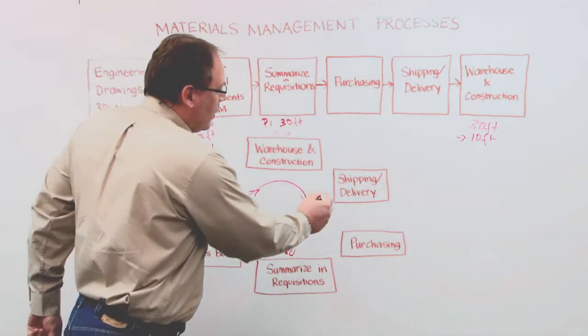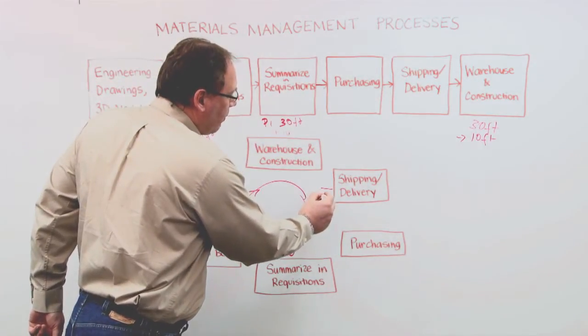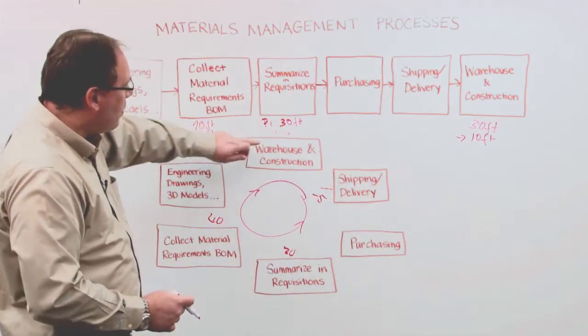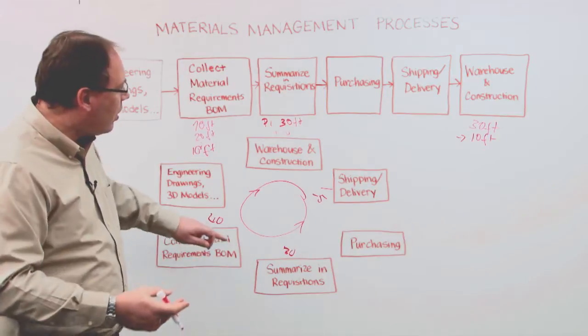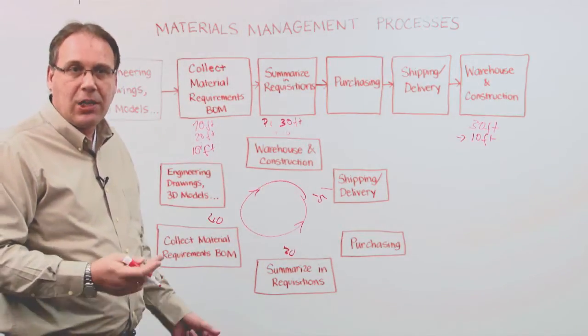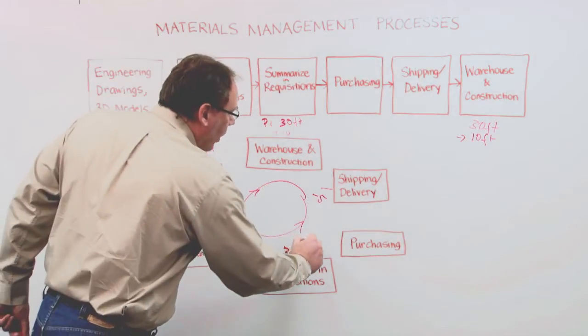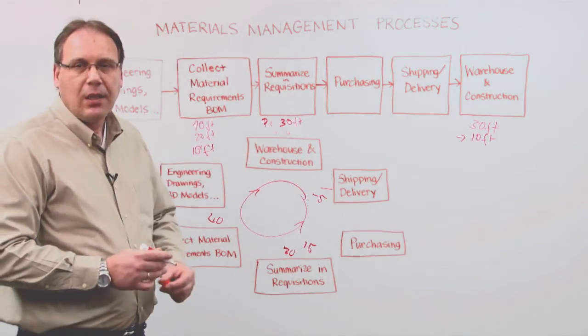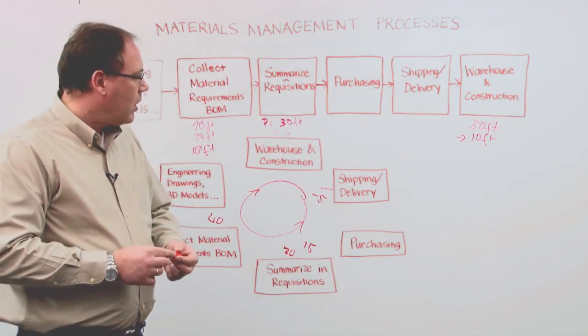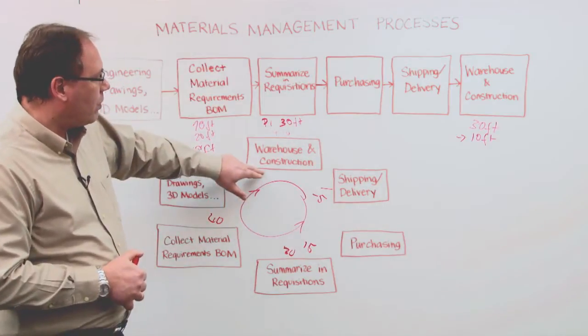When something was damaged in delivery, perhaps minus 5, then suddenly the system knows it's not just 10 more I need in the model, it's also now 5 because it was damaged. So actually I need 15 more, right? Make sure I have always enough materials in the warehouse for construction.